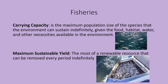Maximum sustainable yield is the most of a renewable resource that can be removed every period indefinitely. For example, it's the most fish that can be caught while still allowing those fish to renew to a sustainable point — not limiting the amount we can catch in the future. It's the most that can be removed every period so that it doesn't reduce our ability to remove fish in the future. That's what we call maximum sustainable yield.